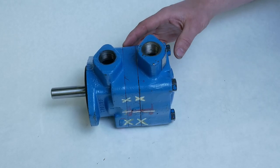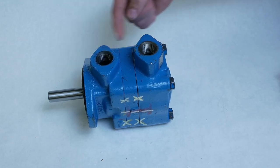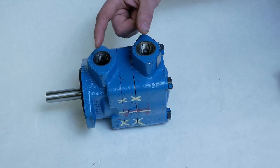All right, let's take a look at this Vickers vane motor. We can tell it's a motor by both ports on this three-piece housing being the same size.